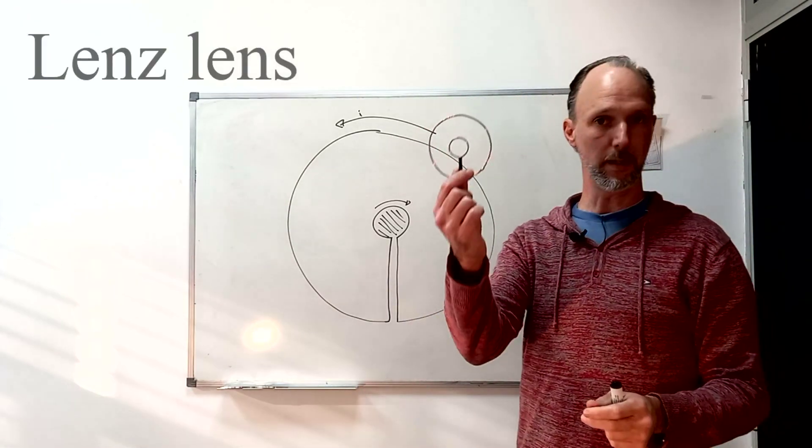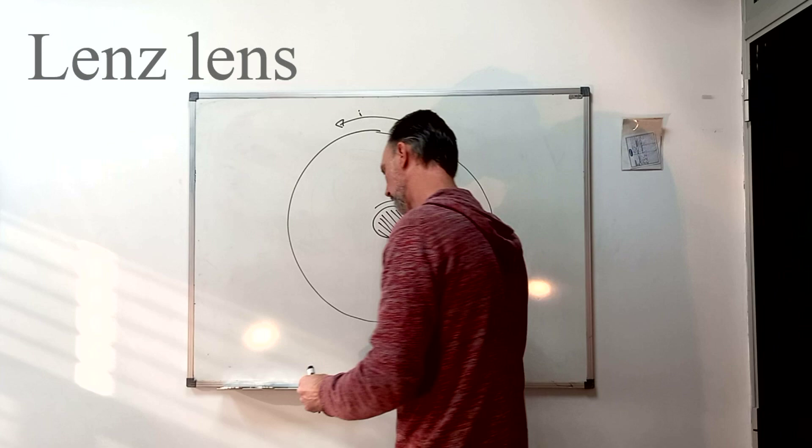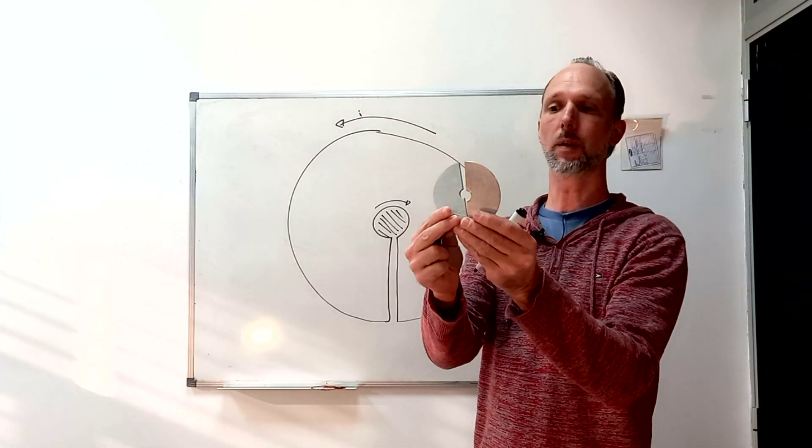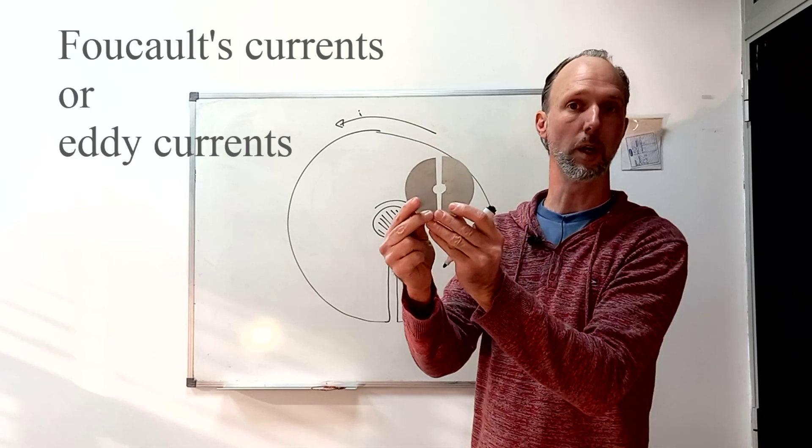a Lenz lens. It works with a wire and it also works with a screen of metal like this one, with Foucault currents.